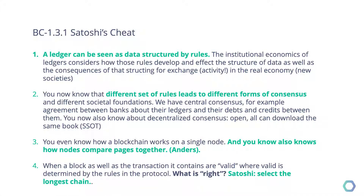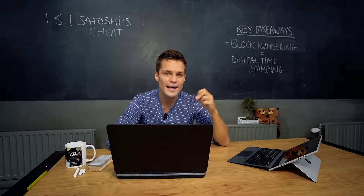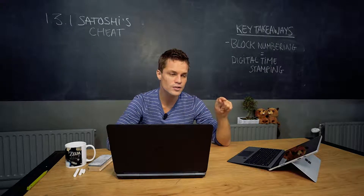Satoshi's rule — Satoshi's cheat — was: follow the longest chain. In other words, we have the longest chain principle, where Satoshi basically says the truth is the longest chain. But is that truly a solution to the Byzantine general problem? Does the general know instantly, 'that's the truth I can follow'?